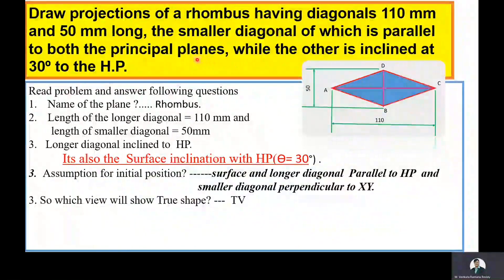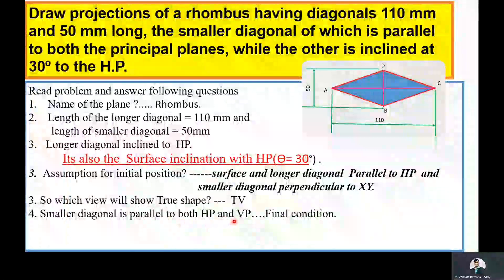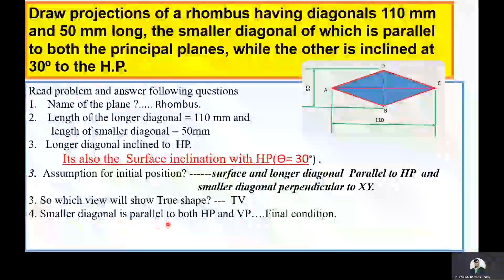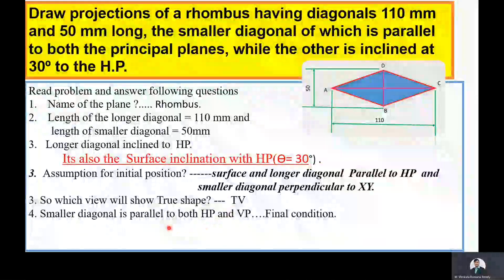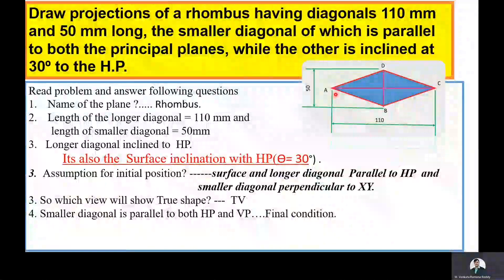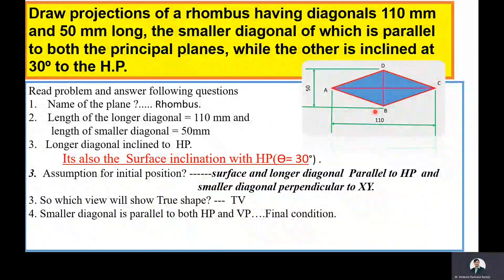The condition given in the problem related to the smaller diagonal is that it is parallel to both HP and VP — this is the final condition. In the initial position, the smaller diagonal is perpendicular to the XY line, but in the final condition we need the smaller diagonal parallel to both HP and VP. The rhombus is resting on its corner while its surface is making an inclination, and that corner with the remaining two sides makes equal inclination to the XY line.